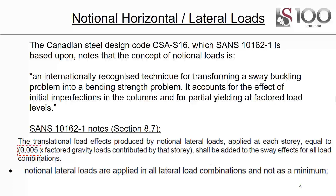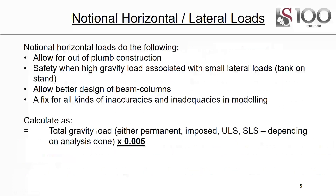SANS-10162 gives us a specific way of doing this in Section 8.7. The translational load effects produced by notional lateral loads applied at each story — equal to 0.005 times factored gravity loads contributed by that story — shall be added to the sway effects for all load combinations. Notional lateral loads are applied in all lateral load combinations and not as a minimum, so they must always be applied.